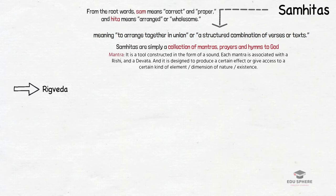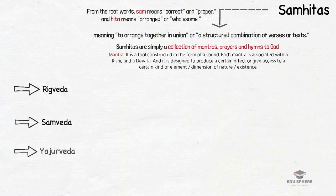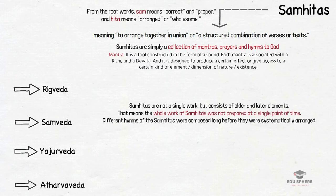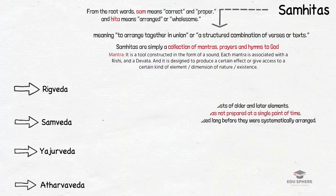The following four Vedic Samhithas are known to us: Rig Veda Samhitha, Sama Veda Samhitha, Yajur Veda Samhitha and Atharva Veda Samhitha. The present form of Samhithas clearly indicates that the collection is not a single work but consists of older and later elements — meaning the whole work was not prepared at a single point of time by a single family.